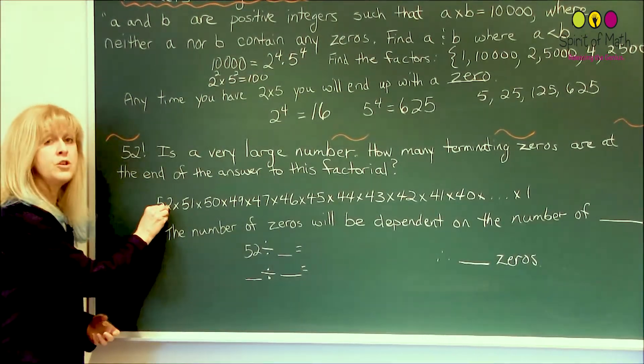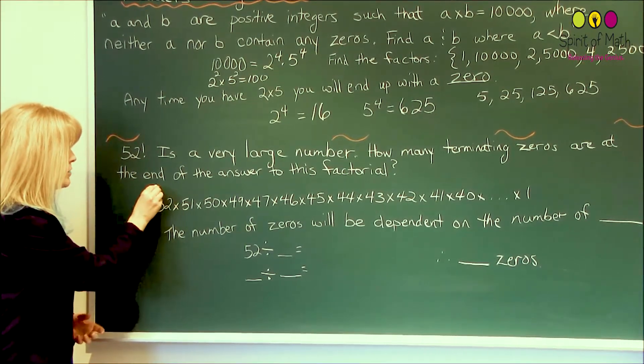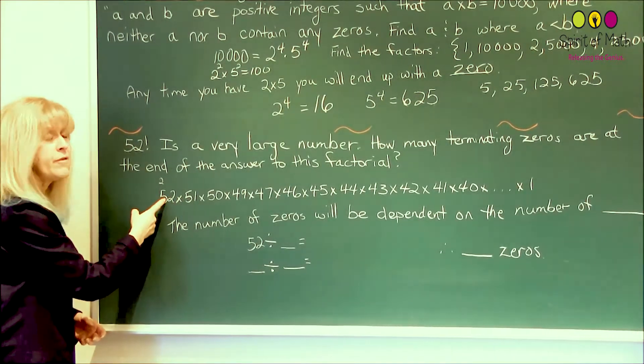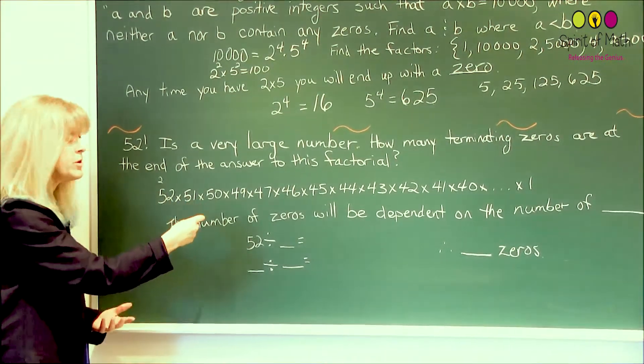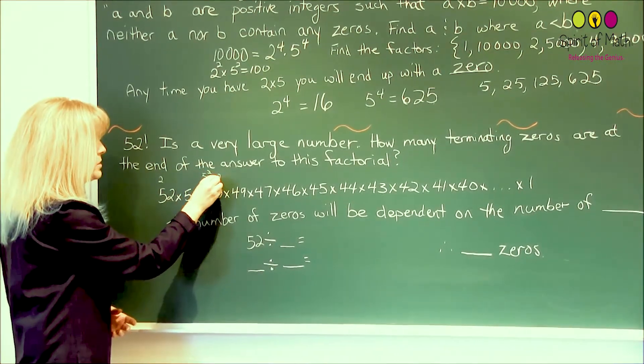First of all, you know that 52 will have a 2 in it, at least one, if you prime factored it. It would actually have more than one, but it doesn't have a 5 in it, so you know that you have a 2 here. What you want to do is try and find out where the 5s are and the 2s are. Oh, 50 will have 5 squared times 2.